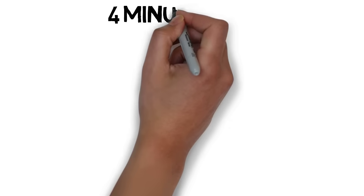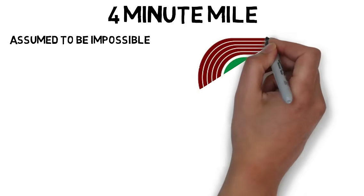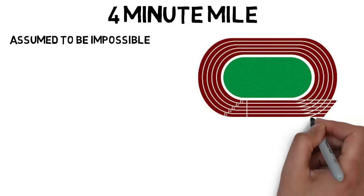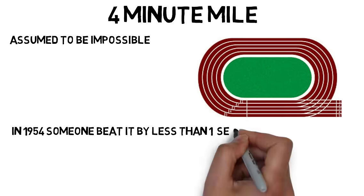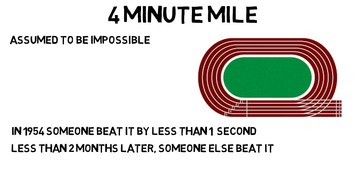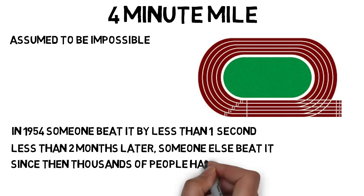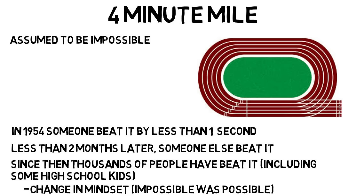I'll end this video on one of my favorite stories of the four-minute mile. The four-minute mile was assumed by experts to be impossible for the human body. In over 100 years of the timed mile, no one had done it. Until one day in 1954, one person finally beat it by less than a second. But then less than two months later, another person beat it. And since then, thousands of people have beat it, including a few high school kids. And people say it was that switch in the mindset of others that the impossible was actually possible that then allowed the other people to beat the time more and more. So yes, your mindset is more powerful than you may think.